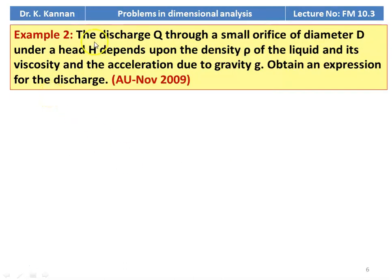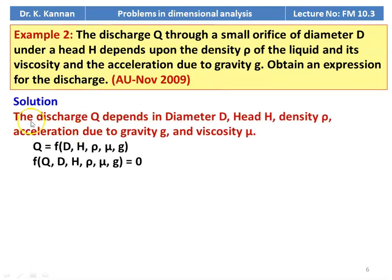Example number 2: Discharge Q through a small orifice of diameter D under a head H depends upon the density rho of the liquid, its viscosity mu, and acceleration due to gravity g. Obtain an expression for the discharge. This problem is from the November 2009 question paper. Q is a function of D, H, rho, mu, and g.